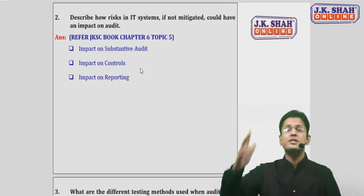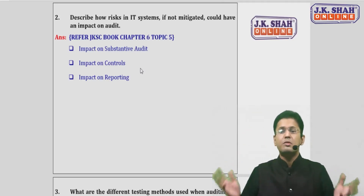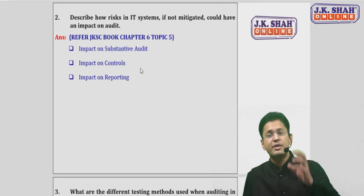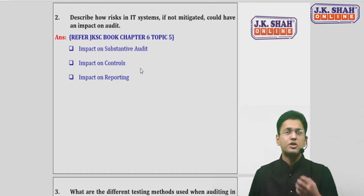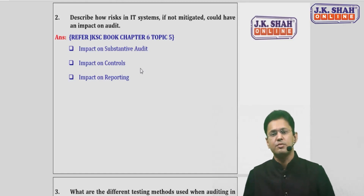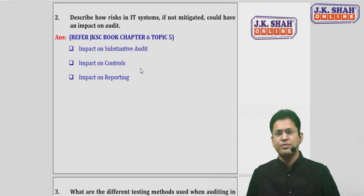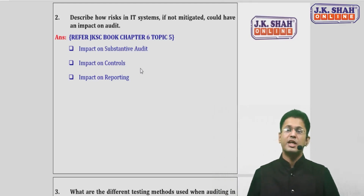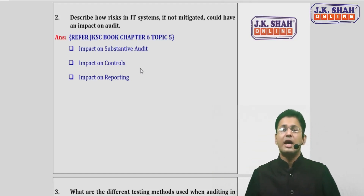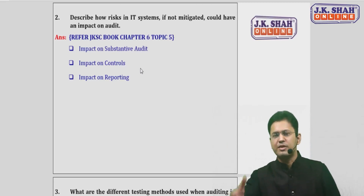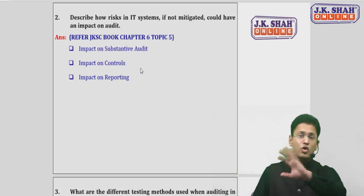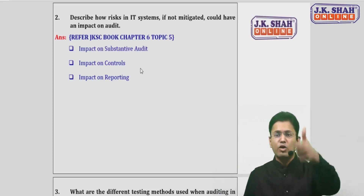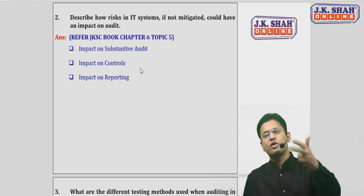Second, you have to increase the nature, timing, and extent of substantive testing, since you would not be able to rely on controls. You have to increase substantive testing on the information, reports, and data coming from the IT system. Ultimately this impacts the report — there would be a deficiency in control having an impact on your opinion, and you would have to report it. IT risks if not mitigated will have a severe impact: first on controls, second on substantive auditing, and third on the reporting.